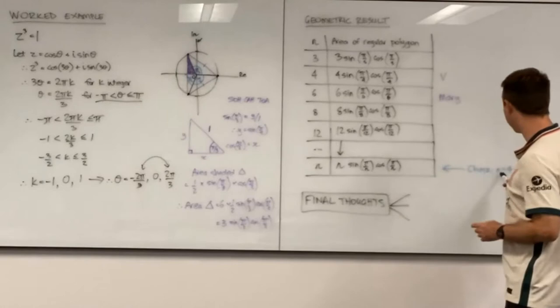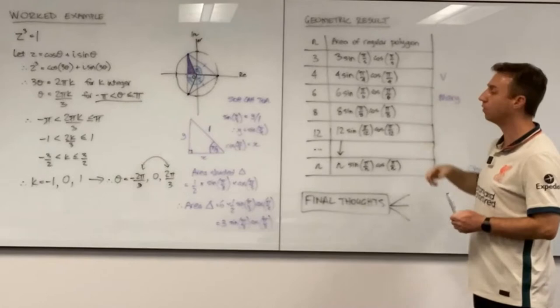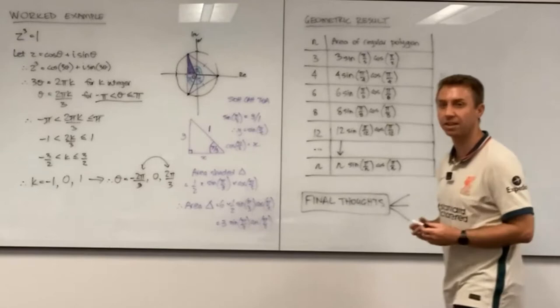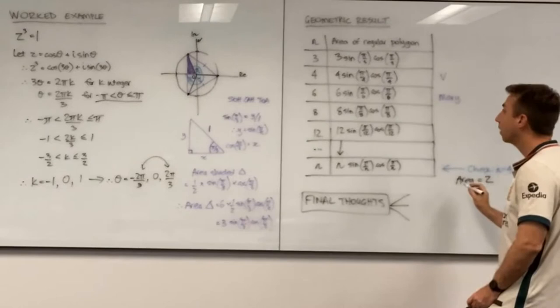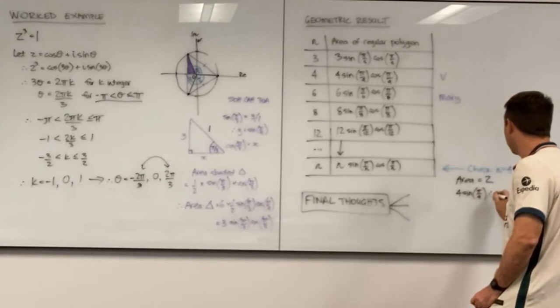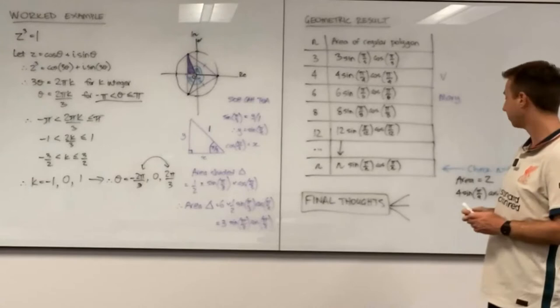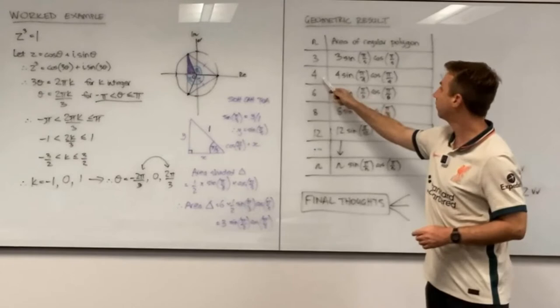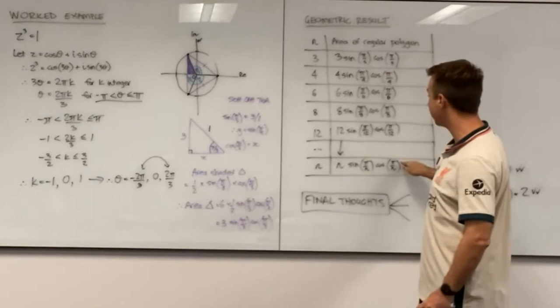And we can check that. I mean we could check it for n equals 4 if we want. So V, you had n equals 4. What is the area of that square that you got? 2. So the area we know is 2. Now does anyone have a calculator? If not I can give you mine. Because what is 4 times sin π/4 cos π/4? And hopefully it equals 2, but let's check. 2. Very nice. So that's a nice little comfort that at least for one of them that's fairly easy to check, we get the right answer. But I can assure you that no matter what n you pick you will get the right answer.